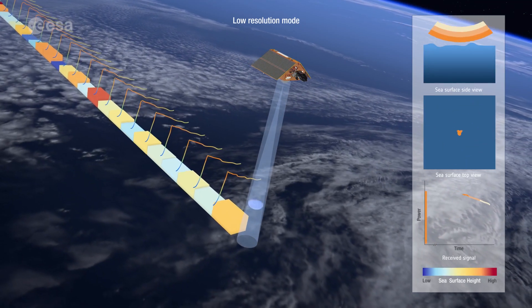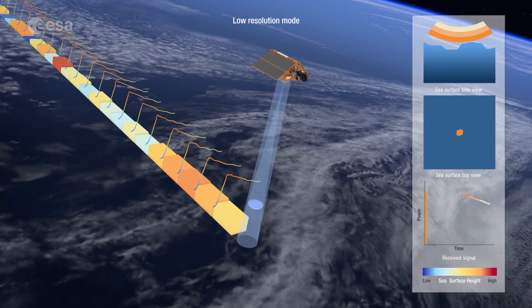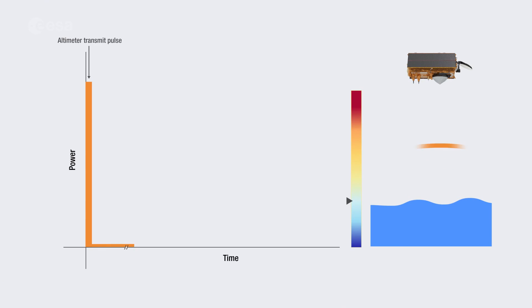The Sentinel-6 radar altimeter derives its height above the Earth by measuring the time it takes for a transmitted radar pulse to reflect off the Earth's surface. Over the ocean, the returned echo provides a waveform.